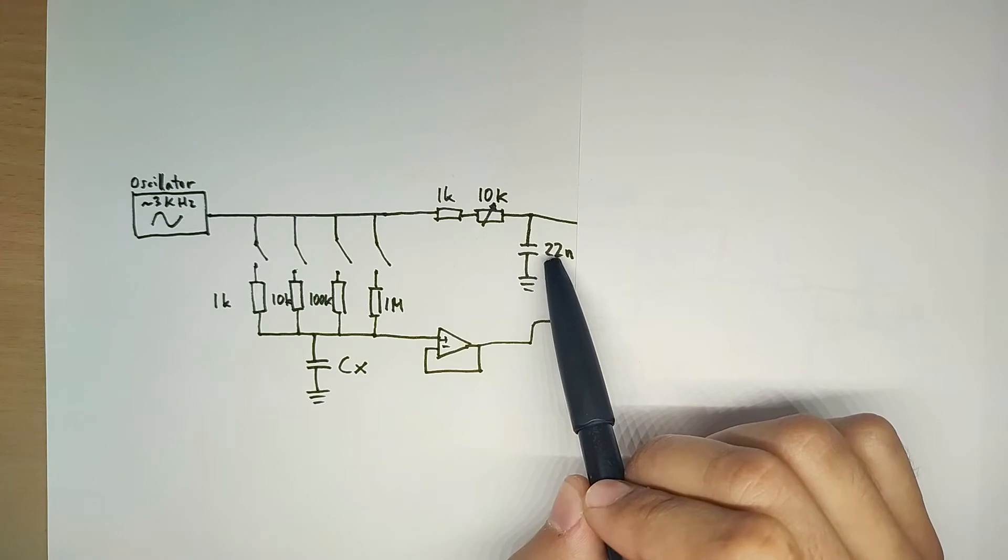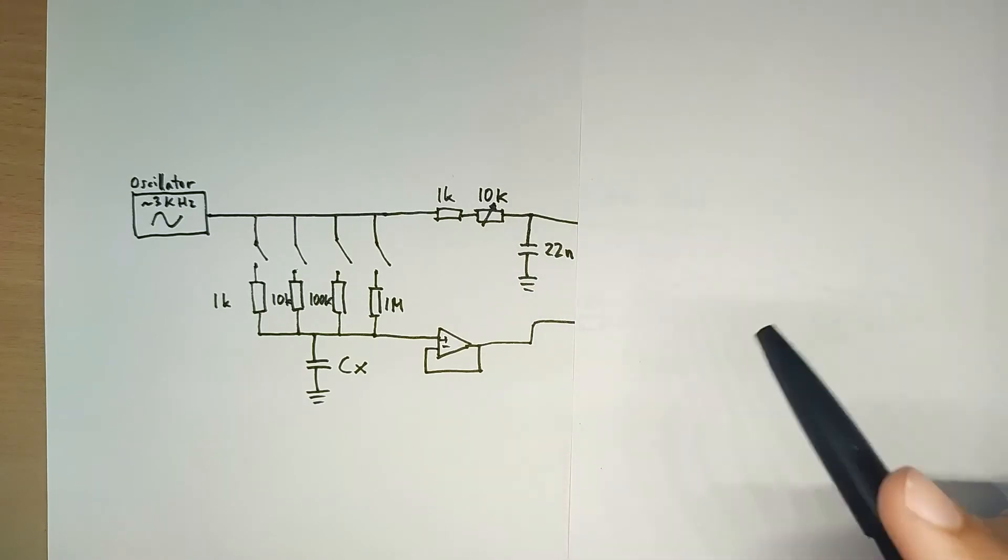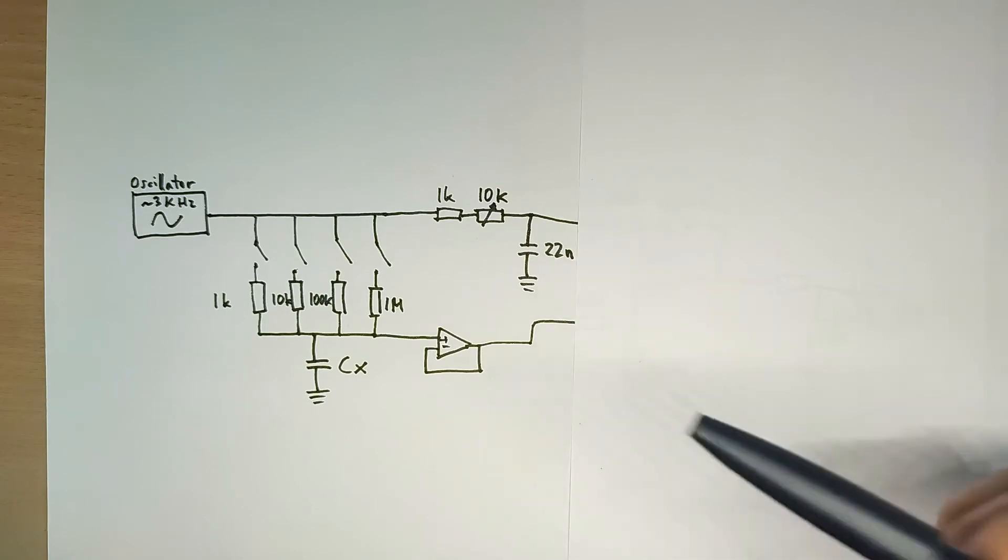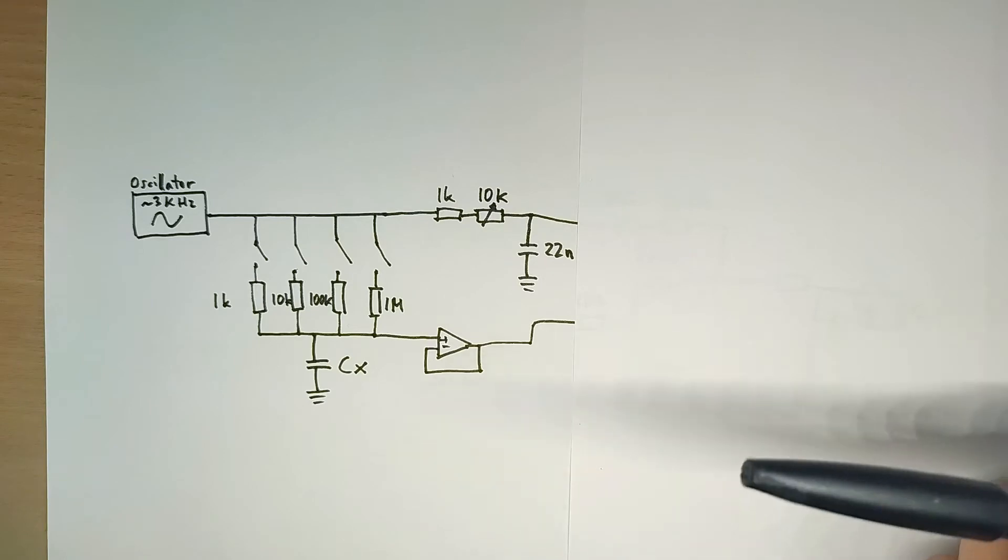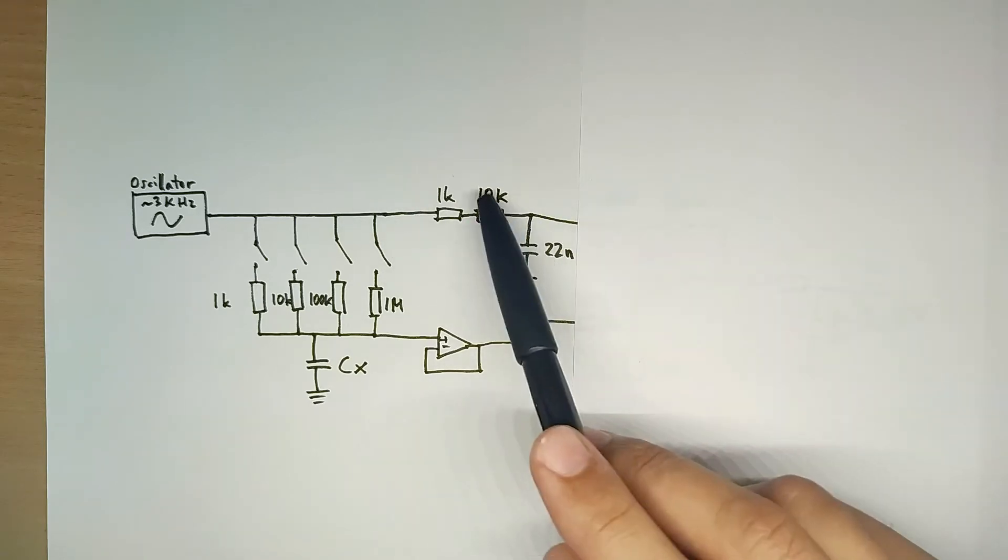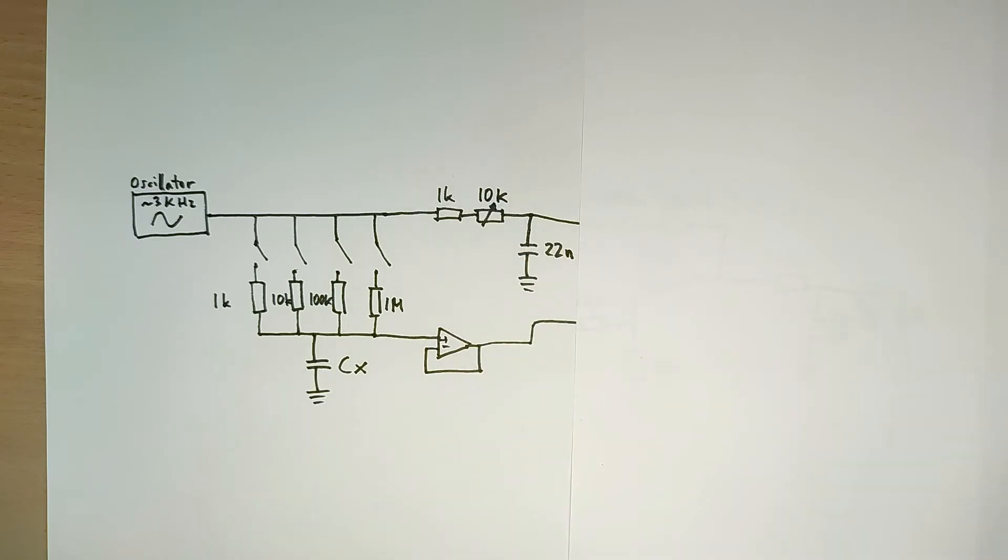Now we need to compare the two outputs and see what the difference is, so that when the difference is zero, meaning they're the same, then we know that we nailed the position of our potentiometer here and we know what the value of this capacitor is.